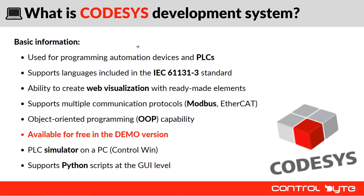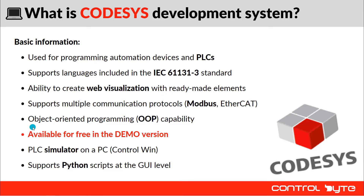Codesys Development System is used for programming automation devices and PLCs. It supports graphical languages like ladder and FBD, or text-based languages like structured text. You can create a beautiful web visualization with ready-made elements, and create communication with protocols like Modbus or EtherCAT. You can create your program with object-oriented programming — an option you don't have in TIA Portal from Siemens. That's why Codesys is really powerful software for developing automation systems.